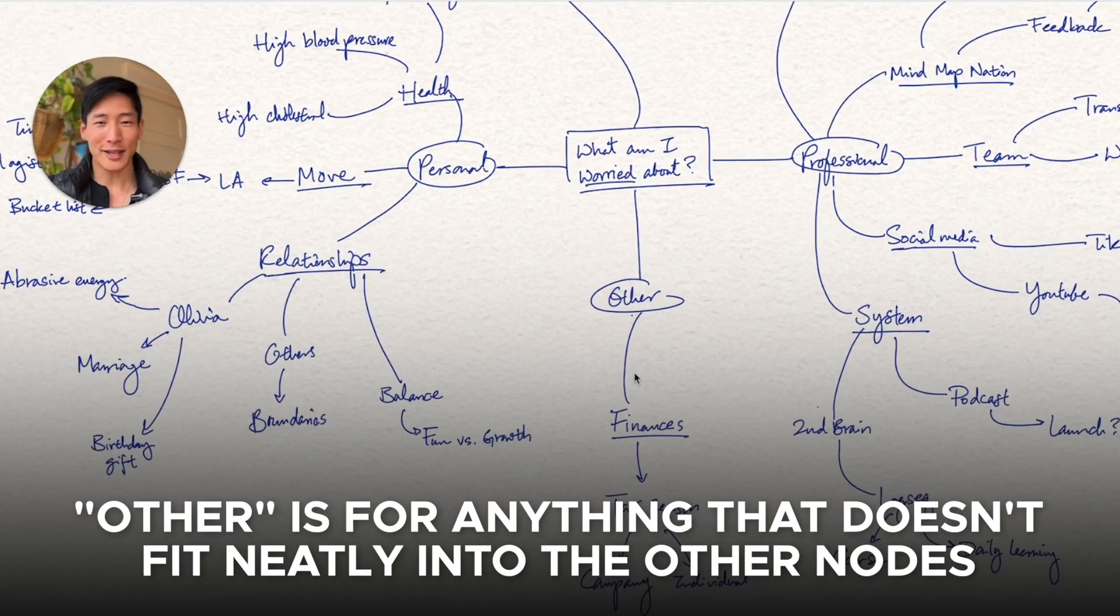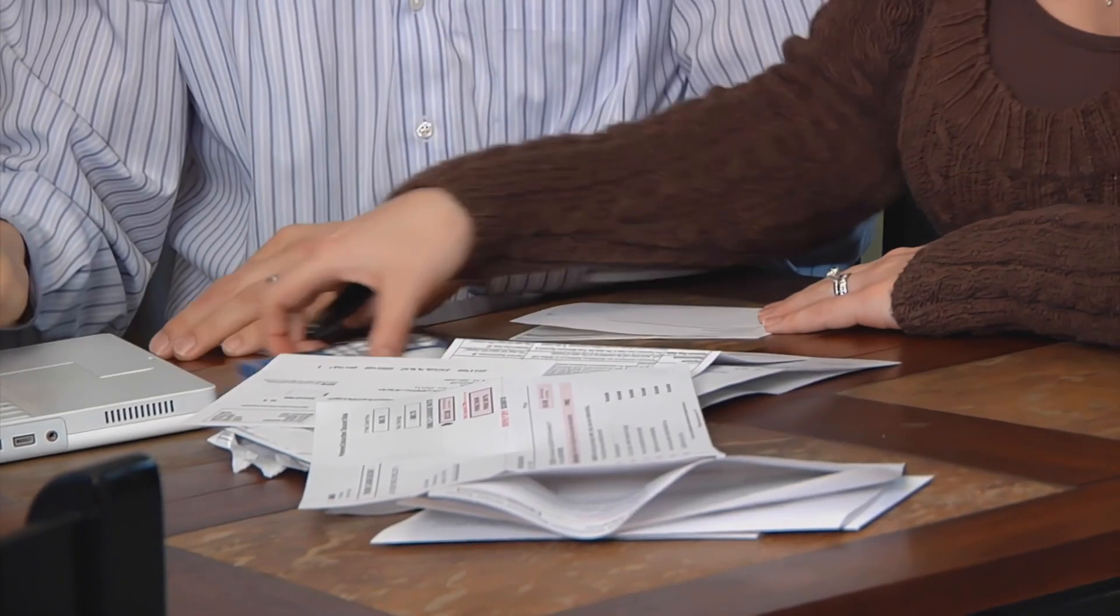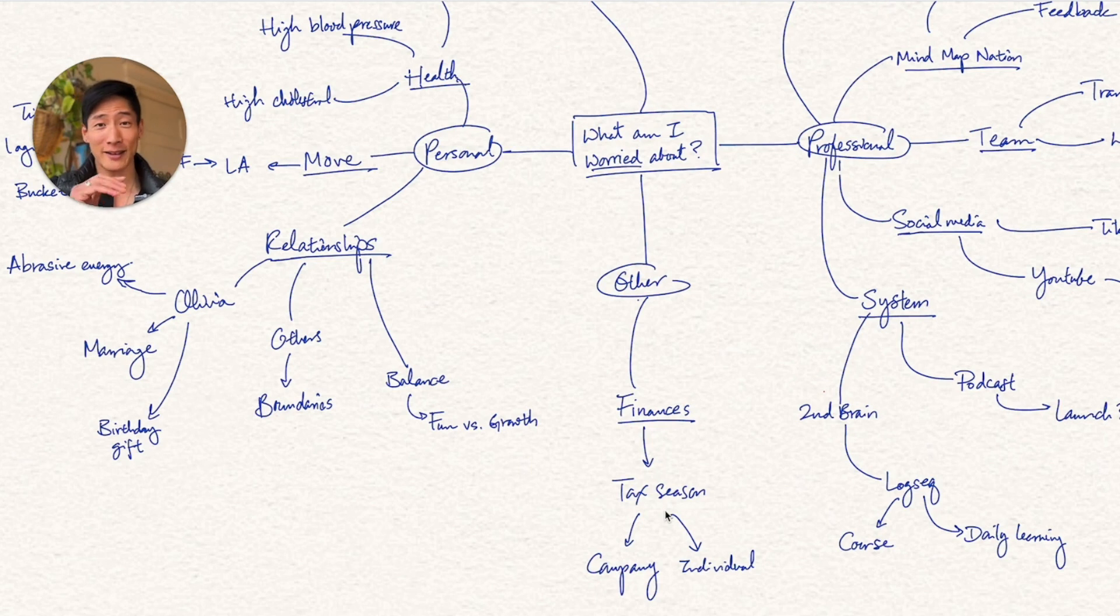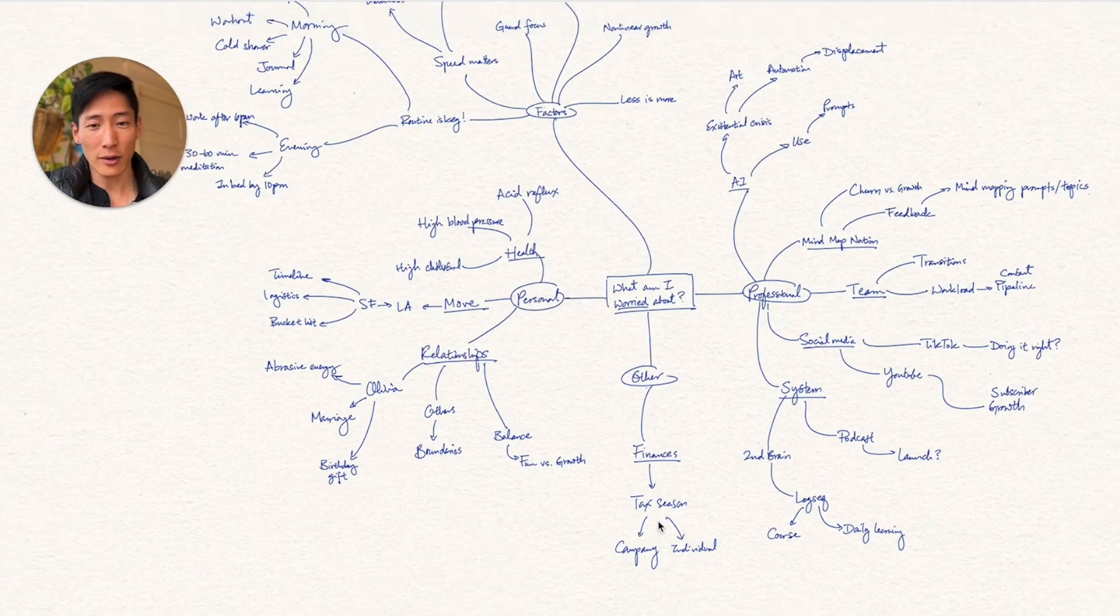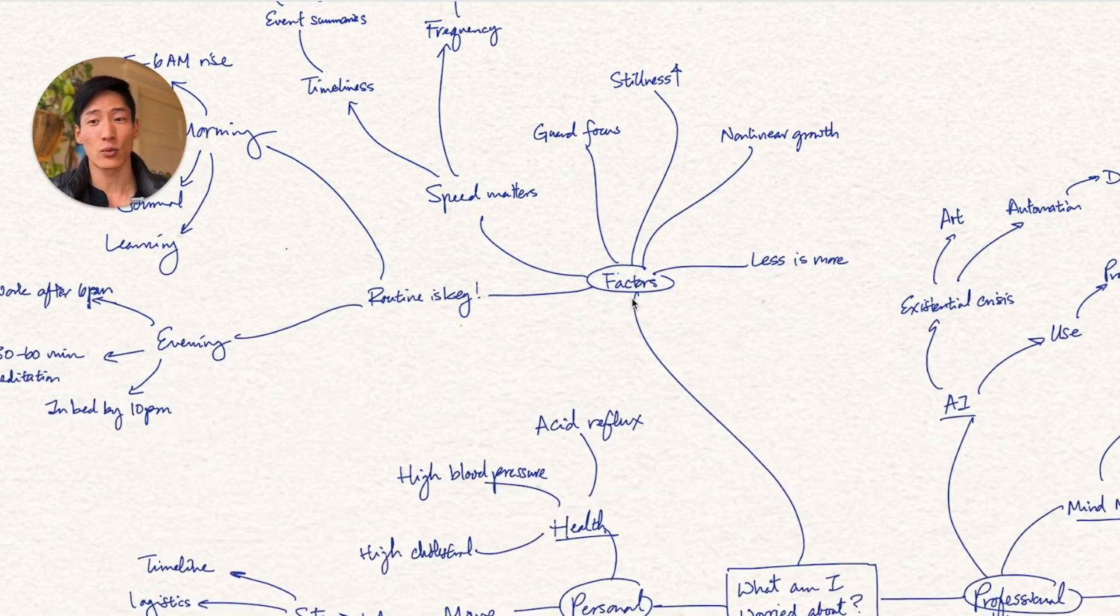Finally, there's other. This is like a catch-all category for whatever comes to mind. So for me, it's actually finances, specifically that tax season is around the corner. And it's the first time that I'm going to be filing my taxes as both a company and an individual. And this is not necessarily something that is traditionally worrisome. I just need to invest that time in order to figure that out and maybe get an accountant to help me. Zooming out a little bit, we've got factors. So remember that factors isn't exactly points of worry, but these are almost like important reminders that we should have. They're the context around our lives that either hinder us or support us in all these other areas.